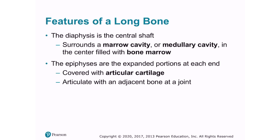For the purpose of describing the various components of a bone, we will use a long bone like the humerus to illustrate. Not all bones have all of these features; nevertheless, a long bone serves well. The major regions of a long bone are the diaphysis and the epiphyses. The diaphysis is the central shaft of the long bone, surrounding what we call a marrow cavity, also called a medullary cavity. The epiphysis is the expanded end of a bone, and many long bones have two epiphyses — the expanded portions at each end.